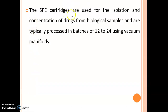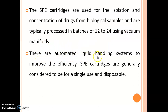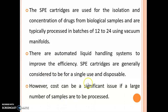Larger cartridges may be required for preparing large volumes of environmental samples such as polluted water with large amounts of contaminants. SPE cartridges are used for the isolation and concentration of drugs from biological samples and are typically processed in batches of 12 to 24 using vacuum manifolds. There are automated liquid handling systems to improve efficiency. SPE cartridges are generally considered to be for single use and disposable; however, cost can be a significant issue if a large number of samples are to be processed.